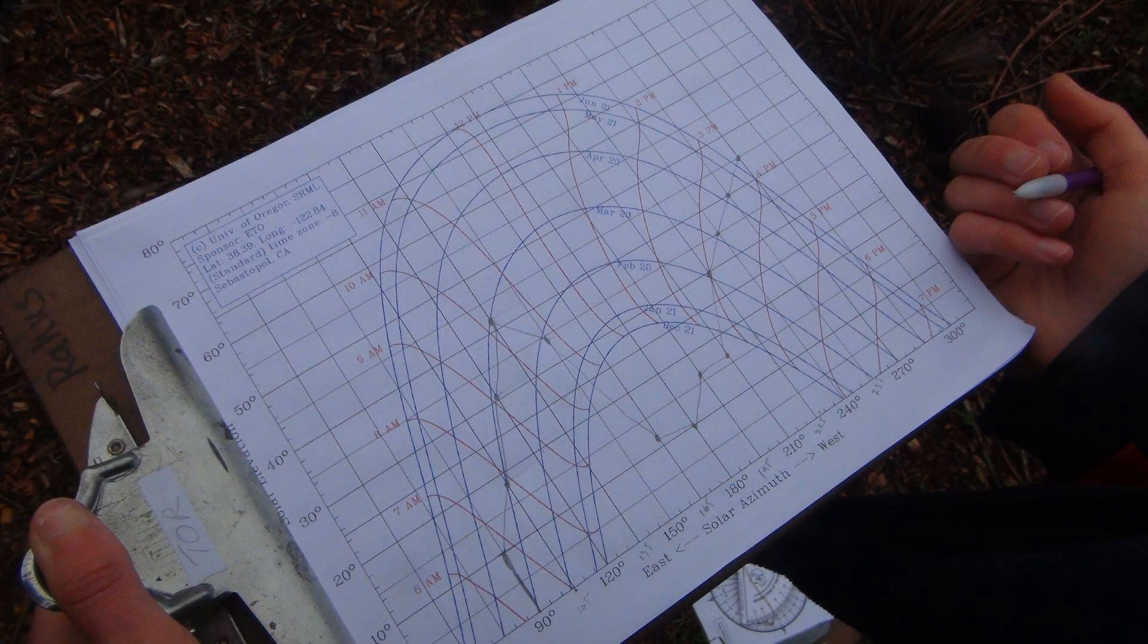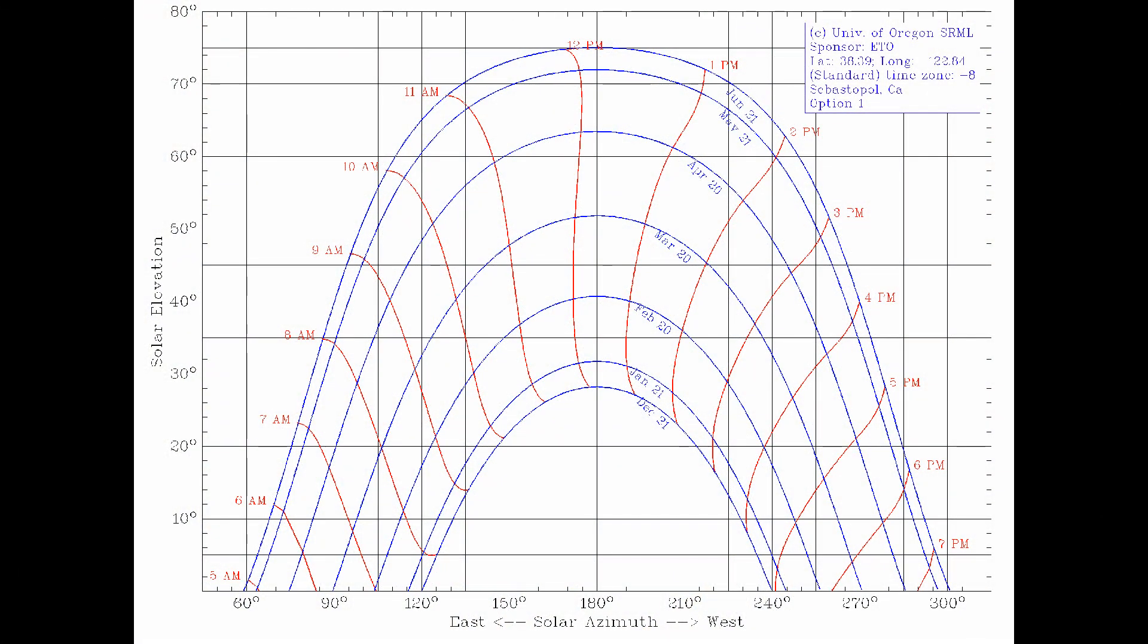Next, you will create and print out a sun path chart for your location. A sun path chart is a graph that shows the path of the sun as it moves across the sky during a typical day in each month. The x-axis of the graph is the azimuth or the direction that the sun is from the observer. North is defined to have an azimuth of 0 degrees and south has an azimuth of 180.